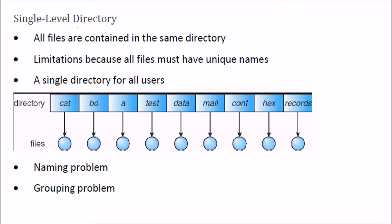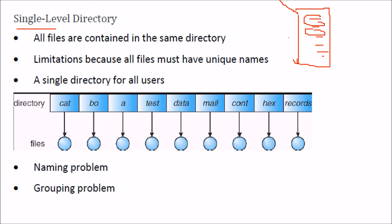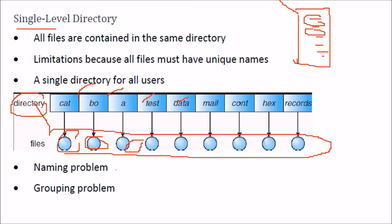There can be multiple scenarios in terms of how a directory is organized. In a single-level directory, there is just one directory and all files are contained in it. The limitation is you cannot have files with the same name because they will conflict. So with a single directory for all users, there is a naming problem and grouping cannot be done.